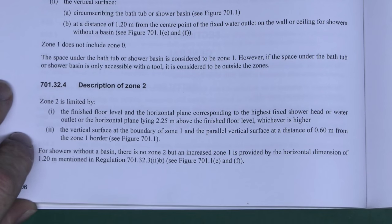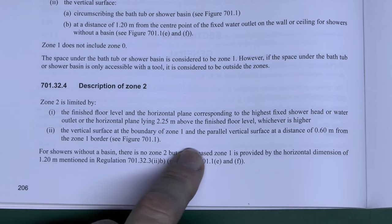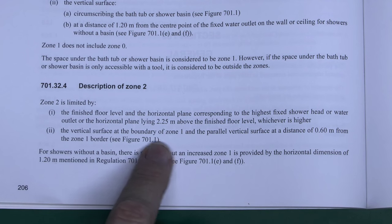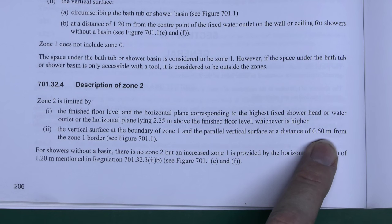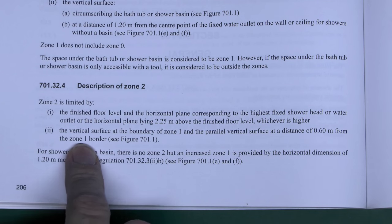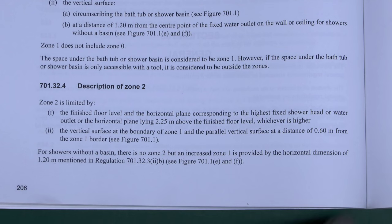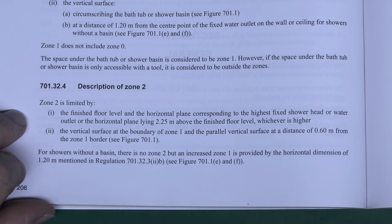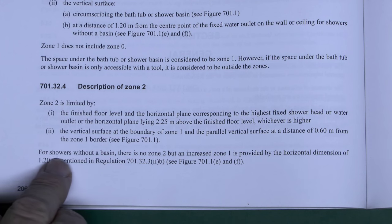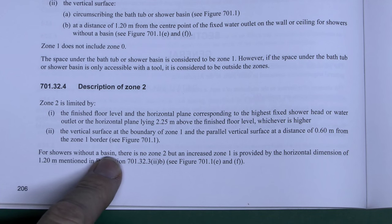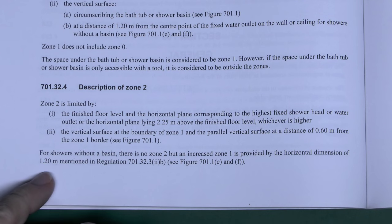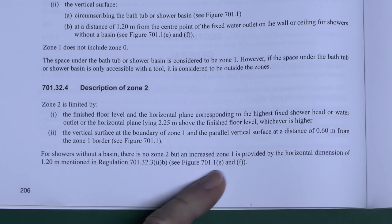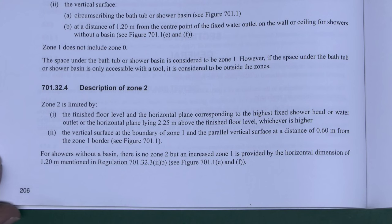Zone 2 is the same height — 2.25 metres above finished floor level — and extends 0.6 metres from the border of zone 1, which essentially means from the edge of the bath or shower, so 60 centimetres or about two feet. If the shower doesn't have a basin or tray, there is no zone 2, but zone 1 is increased to 1.2 metres. There are figures we'll look at in a moment.